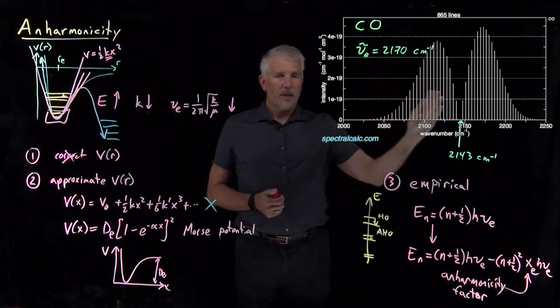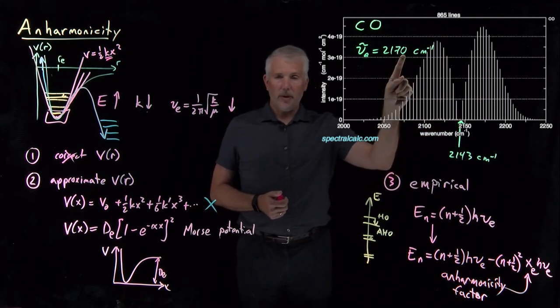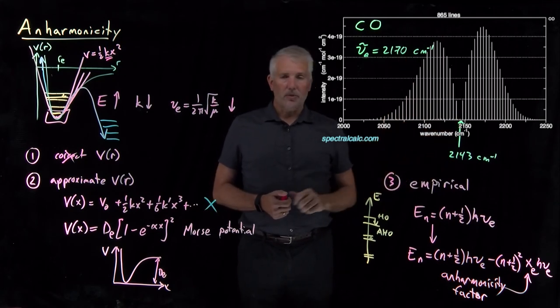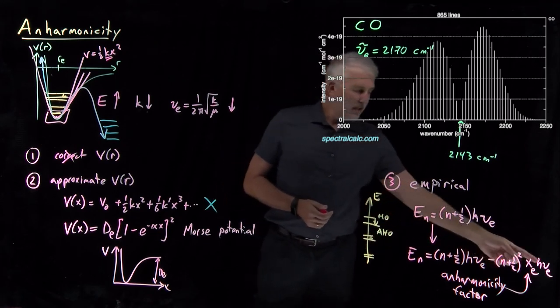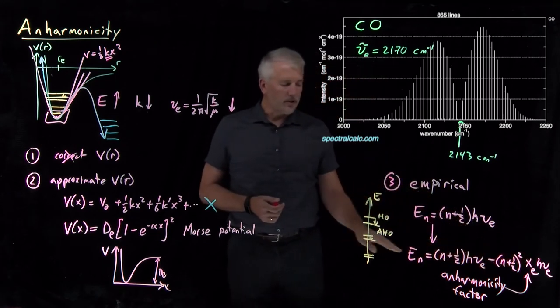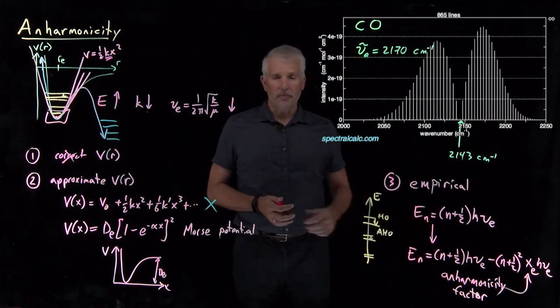What we would do is say quantum mechanics told us that, or at least the harmonic oscillator model plus quantum mechanics told us that this point should come at 2170 wavenumbers. In fact, we see it at 2143 wavenumbers. That suggests the size of this correction we need to make in order for the energy levels to have the values that we observe them to have.